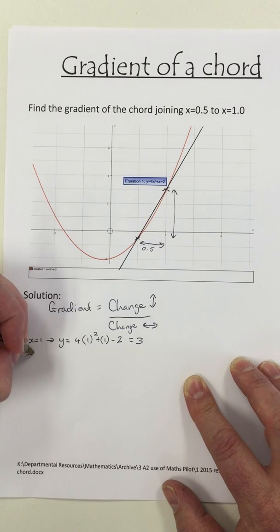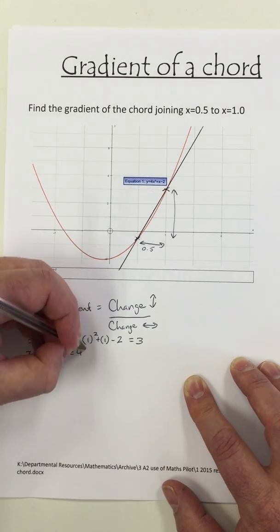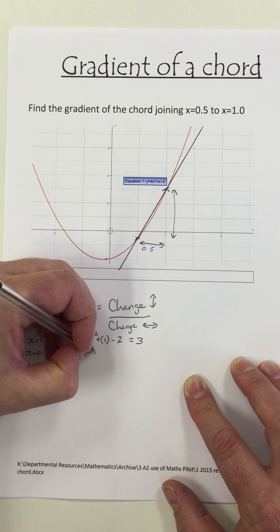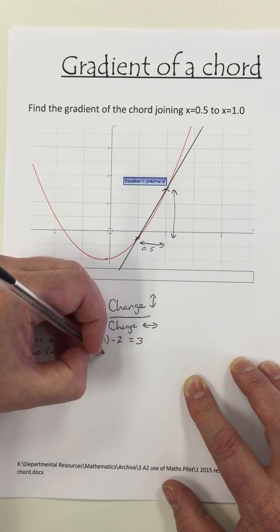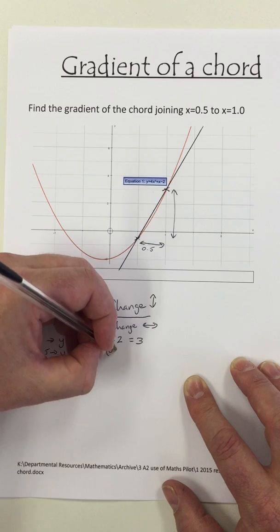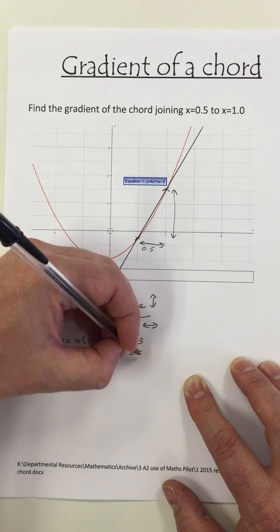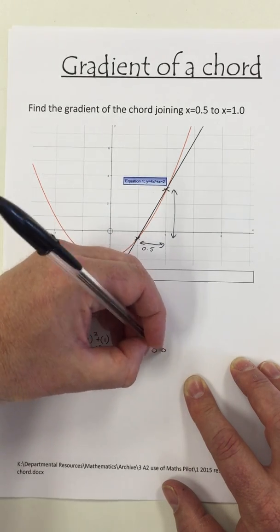Easy. And then for a half, it's 4 lots of a half squared plus a half, take 2, which is minus a half.